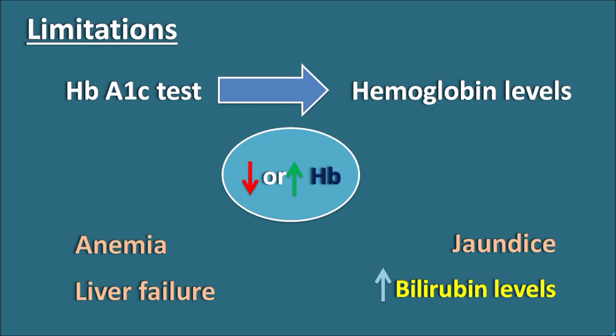In this way, the HbA1c test is a very sensitive test for estimation of glucose levels. One of the advantages of this test is that it can estimate the average glucose levels for the past two to three months in the patient, giving an indication of what the levels of glucose are and how they have been maintained. HbA1c levels should be maintained less than 6.5 percent in normal people, and in diabetic people, the goal is to achieve HbA1c levels less than 7 percent.